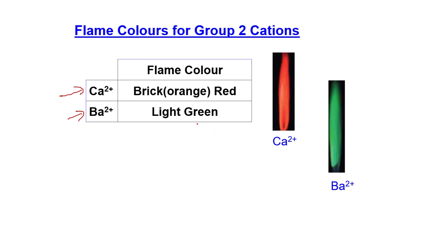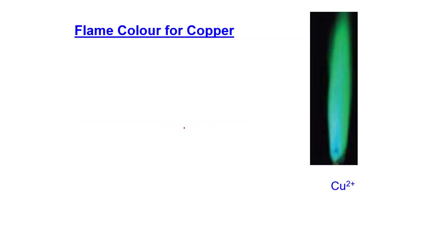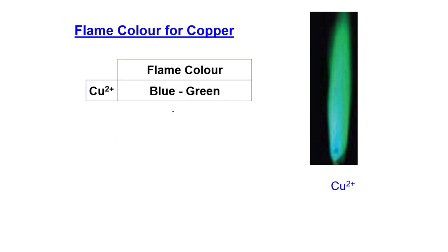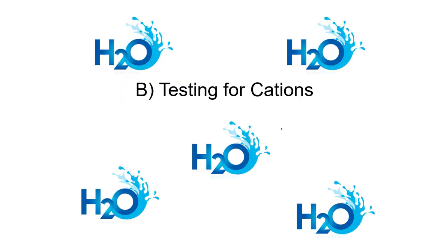Finally, for transition metals, we have copper. Copper produces a blue-green color in the flame test. Please try to memorize all the flame test colors carefully, as they are really important in exams. Now let's move to the chemical test.